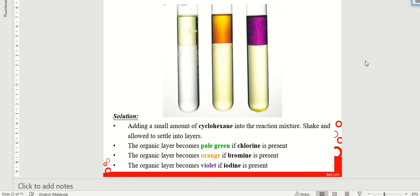This is what happens when we have aqueous halogen solution - chlorine, bromine or iodine. Then we shake, we add a small amount of cyclohexane into the aqueous solution and then we shake.